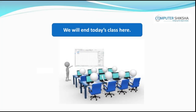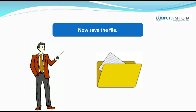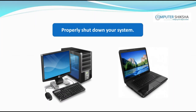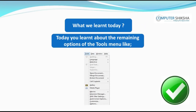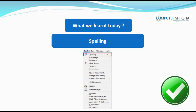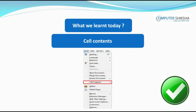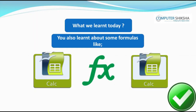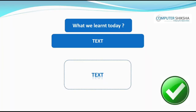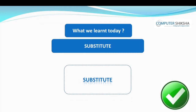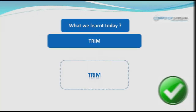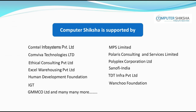Since this class now ends here, all of you save your file and then after closing it, shut down your computers properly. Today you learned about the remaining options of the tools we know: spelling, detective, goal seek, solver, scenario, share document, merge document, protect document, and cell contents. You also learned about formulas like text, left, right, mid, find, search, substitute, length, and trim. Computer Shiksha is supported. Thank you.